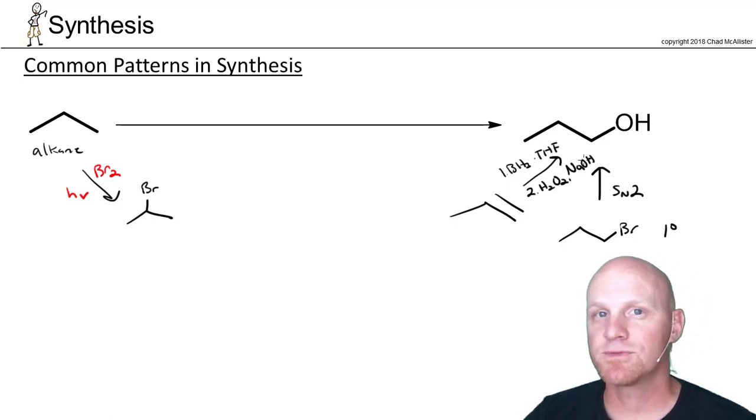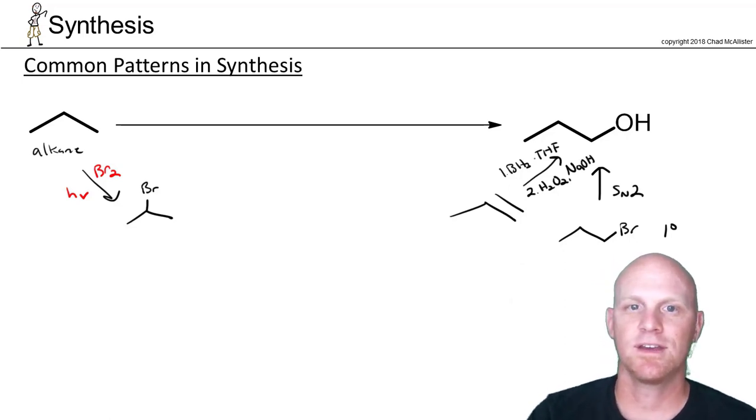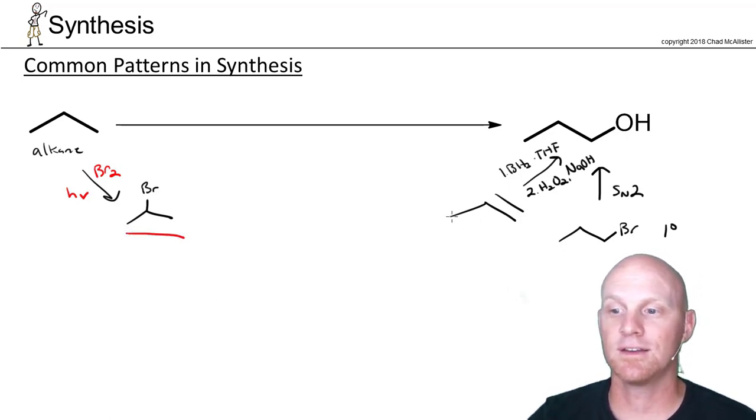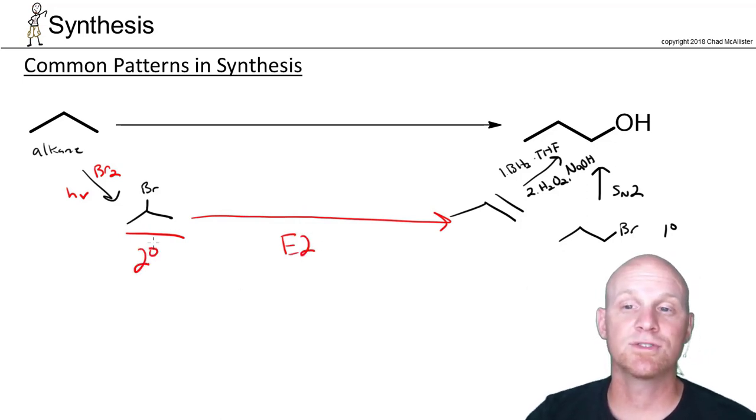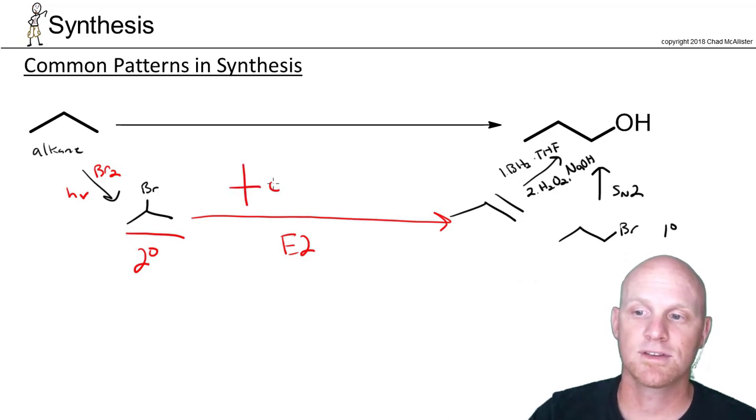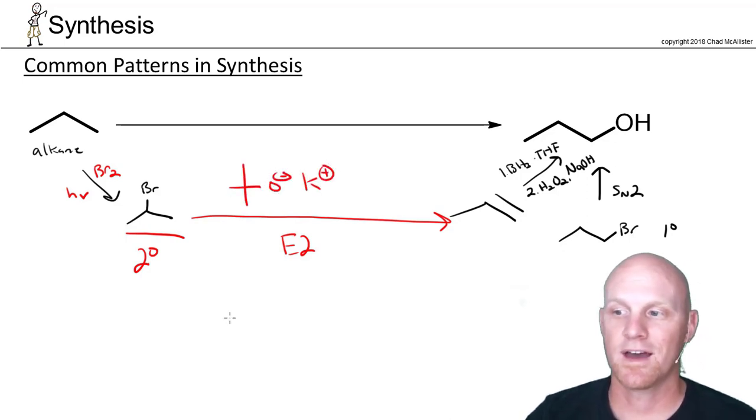The question is, is it easier to turn our 2-bromopropane either into 1-bromopropane or into an alkene? In this case, we can definitely turn into the alkene, and we can do it in one step here. That's just simply E2 elimination. We've got a secondary halide, so to make sure we do E2 elimination, we should use a bulky base. In this case, I'm going to use potassium tert-butoxide. That forms our alkene.